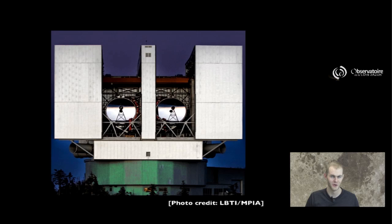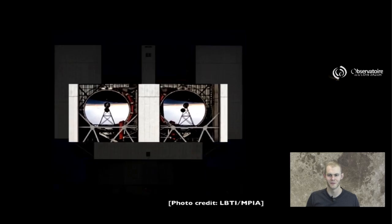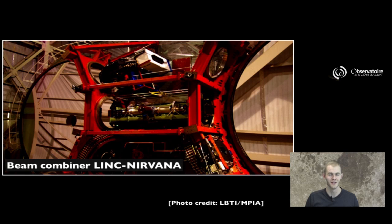And the LBT, in case you don't know, is a telescope made of two 8-meter telescopes that sit together on one single common mount. And if you look at the details, there is a way to recombine the light coming from those two telescopes into an interferometric recombiner. It's called Link-Nirvana. And that is typically a configuration that is going to be multi-axial to take advantage of the wide field of view capability of one such interferometer.